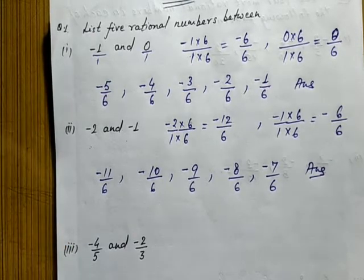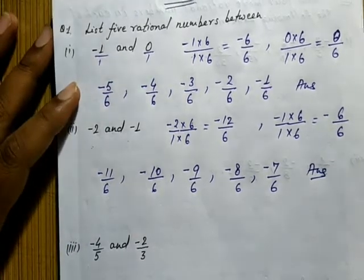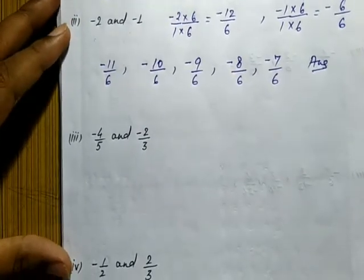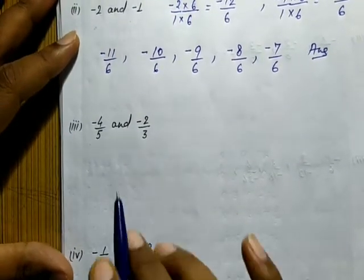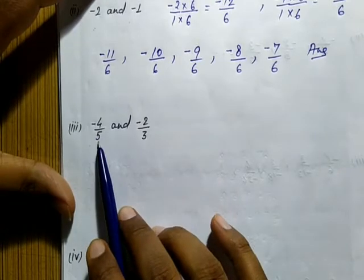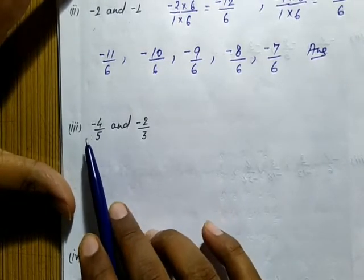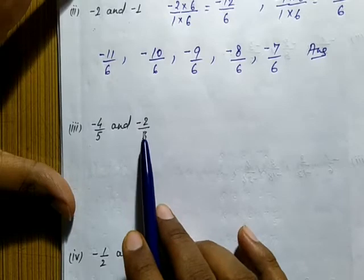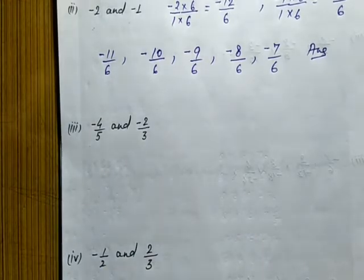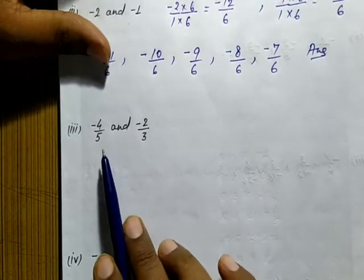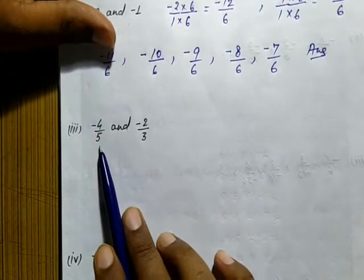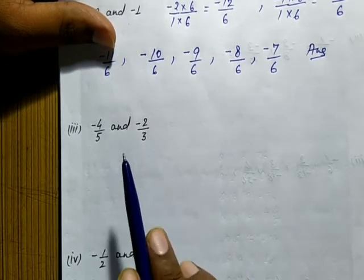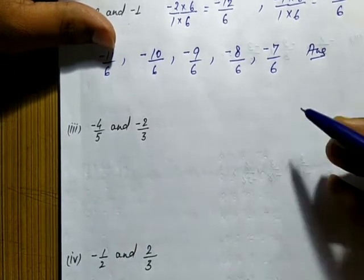There are unlimited numbers, so it is not necessary that my answer and your answer will be the same. Now come to the third one: find five rational numbers between minus four upon five and minus two upon three.